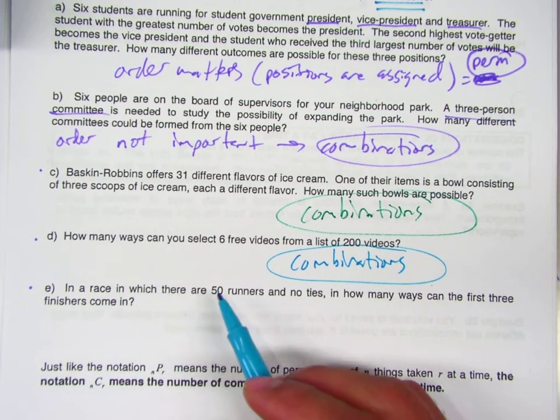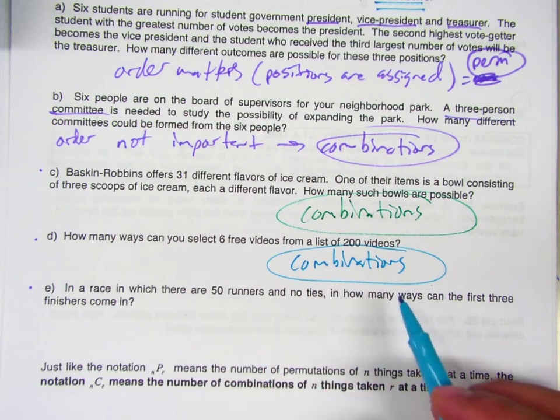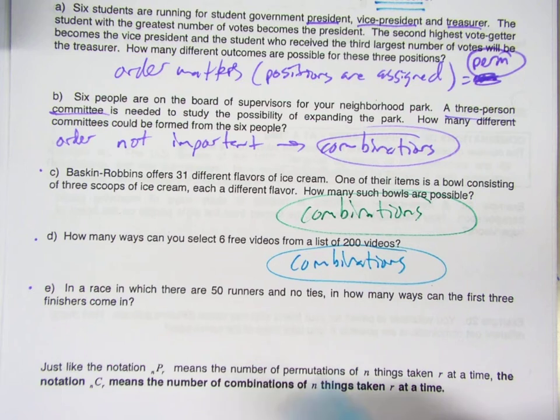Here we got a race. 50 runners. How many ways can the first three finishers come in? Does order matter here?